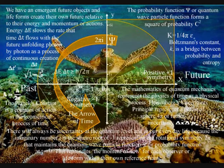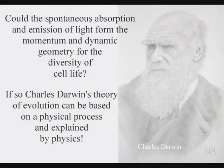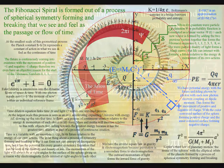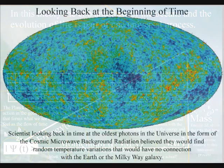I will place links below this video to independent research that supports this. If this theory is correct, Darwin's theory of evolution, at the most fundamental level, could be based on a geometrical process that can be explained by physics. This could explain why life seems to be mathematical — the maths represents the geometry of the process. In such a theory, the ebb and flow of the oceans and the evolution of life is part of one universal process.